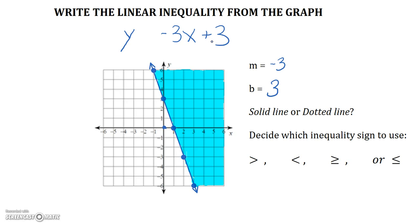Our next step is to identify the type of line. Looking at the line, it is solid. So right from the get-go, we can eliminate the greater than and less than sign, because solid lines are either greater than or equal to, or less than or equal to.